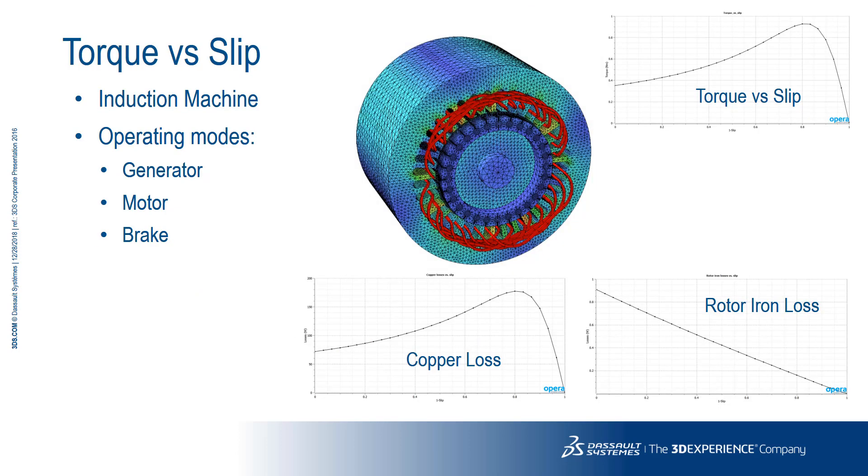The torque versus slip analysis creates a series of time harmonic models for different slip frequencies to capture complete torque characteristics of induction machines. The stator is excited at set slip frequencies, which may be both positive and negative. This allows the three operating modes, braking, motor, and generator, to be evaluated. The output includes the value of peak torque, value of slip at peak torque, and the torque versus slip curve.